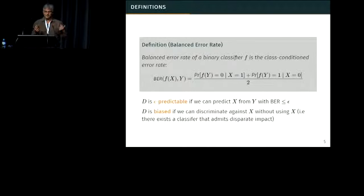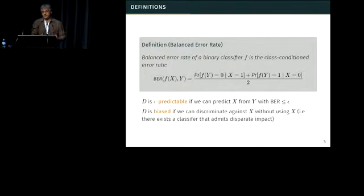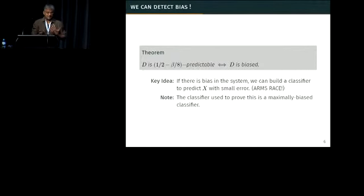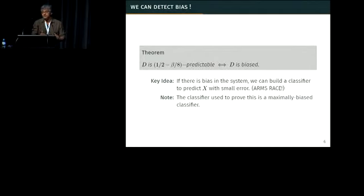We'll say that a data set is epsilon-predictable if, once you remove the protected attribute X and have everything else, you can predict X back from Y with a balanced error rate of less than epsilon. And we'll say that the data set is biased if you can discriminate against a particular subgroup indicated by a value of X without using that value — if there exists a way to admit disparate impact. The main result we show is that predictability and being biased are related. In particular, if you have a certain value of the epsilon threshold for predictability — depending on a technical parameter beta as well as the actual value of disparate impact — then the data set is biased. If I have the ability to predict X from the rest of the data, there is clearly information flow happening, and that can be used to discriminate.